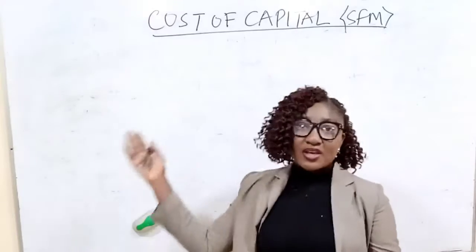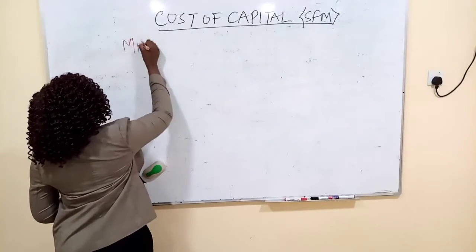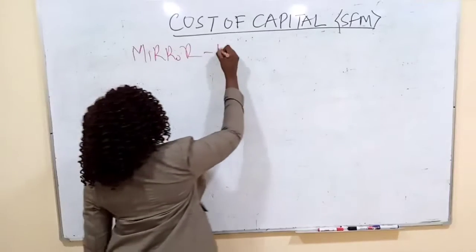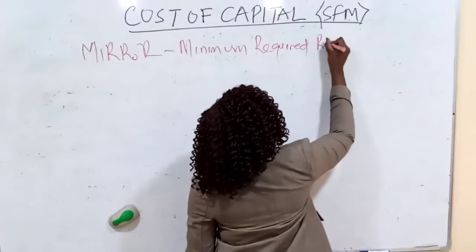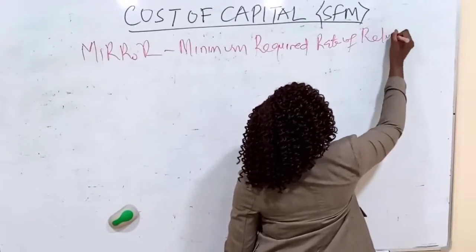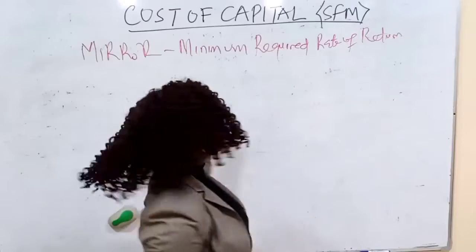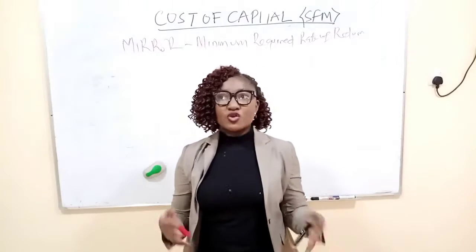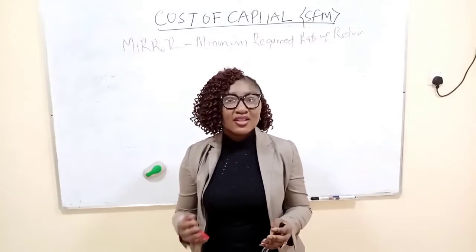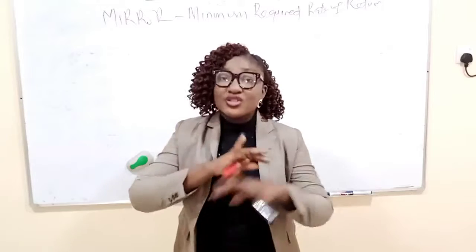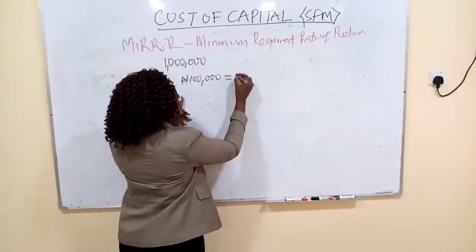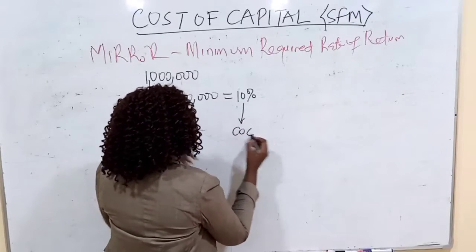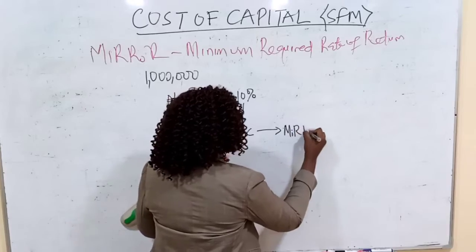What is cost of capital? Cost of capital is defined as the minimum required rate of return. It refers to the costs used to raise capital. For example, if you are raising one million dollars and you spend about one hundred thousand dollars to raise it, that one hundred thousand dollars — which is 10% — is the cost of capital. This cost of capital should be the minimum required rate of return.